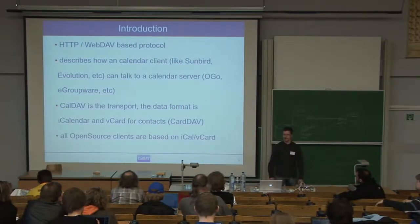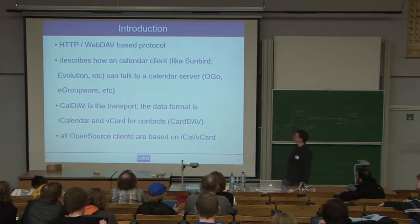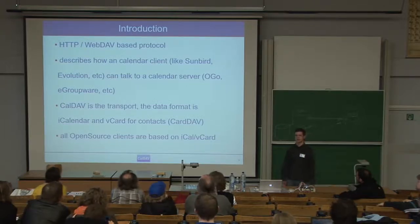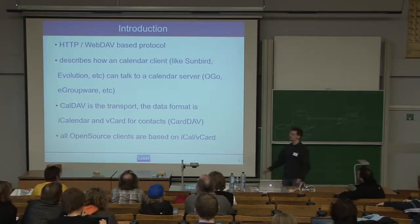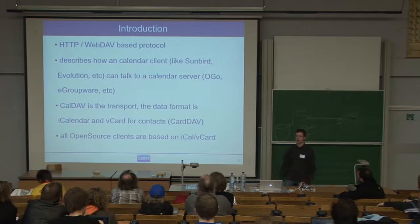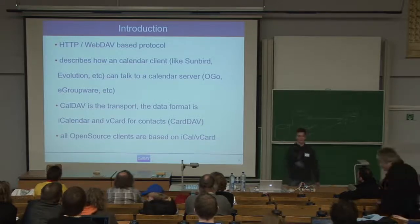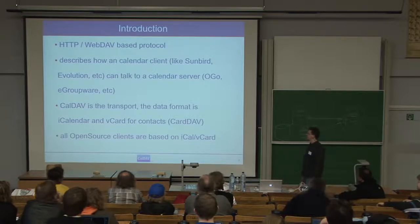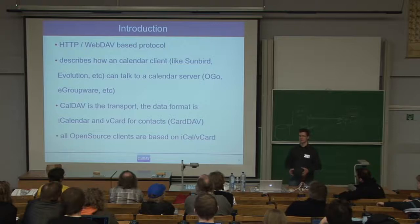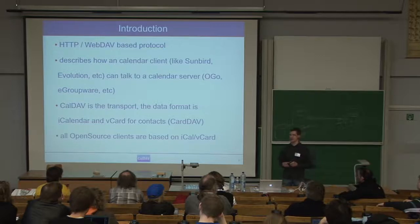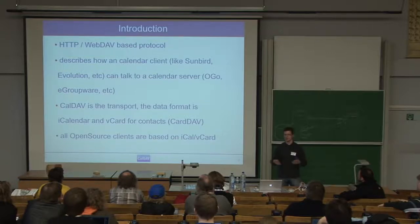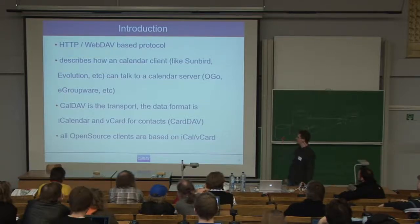CalDAV is a simple HTTP-based calendaring protocol. It's been a standard since last year. It describes how any groupware client, like Thunderbird or Evolution, can talk to a server system like eGroupware, OpenGroupware, or Sarafa. CalDAV is just a transport protocol, so it doesn't describe how the actual data is formatted. For the actual data, the iCalendar and vCard formats are used, which have been standards for more than 10 years.